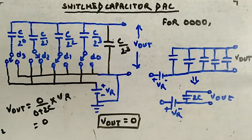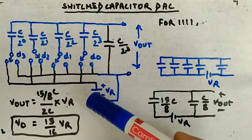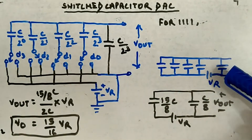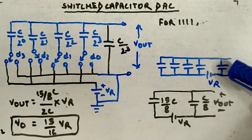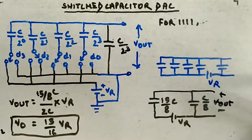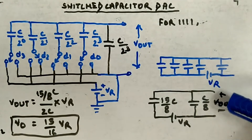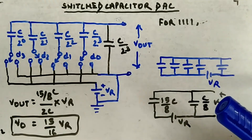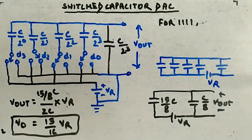For a 1111 input, all four bits are 1, so all four weighted capacitors are connected to the positive Vr terminal. The last extra capacitor is still connected to ground. The positive-side capacitors are C/2³, C/2², C/2¹, and C/2⁰. Adding these gives 15C/8. On the ground side you have C/8. Using voltage division, Vout equals (15C/8) divided by 2C total, so C cancels and you get 15 divided by 16 times Vr.